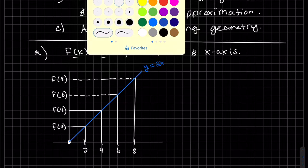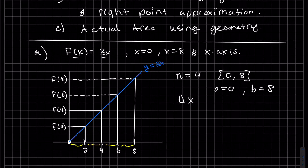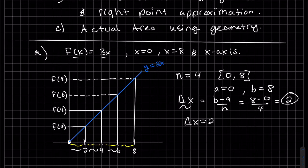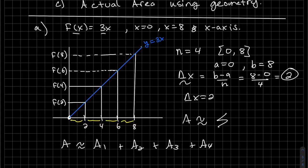Drawing it out: there are four rectangles over the interval from 0 to 8. So a = 0, b = 8. Delta x = (8 − 0)/4 = 2. Checking against the picture: the widths land at 2, 4, 6, 8 — that works. Our approximate area will be area 1 plus area 2 plus area 3 plus area 4, which is the sum from k equals 1 to 4.